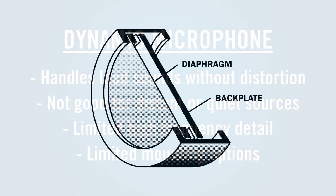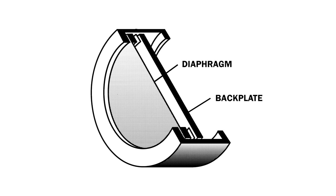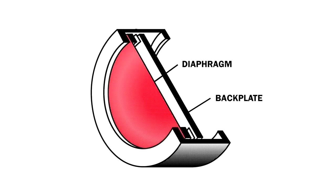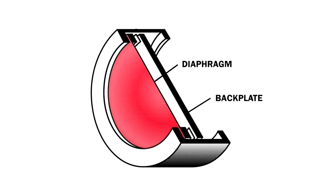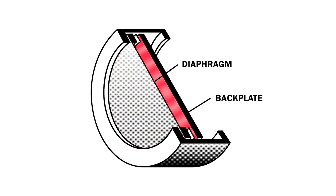In a condenser microphone, sound waves also strike a diaphragm and cause it to vibrate. The diaphragm is mounted just in front of an electrically charged plate. As the diaphragm moves back and forth, it changes the electric field between the diaphragm and plate, which generates an electrical signal that corresponds to the sound.